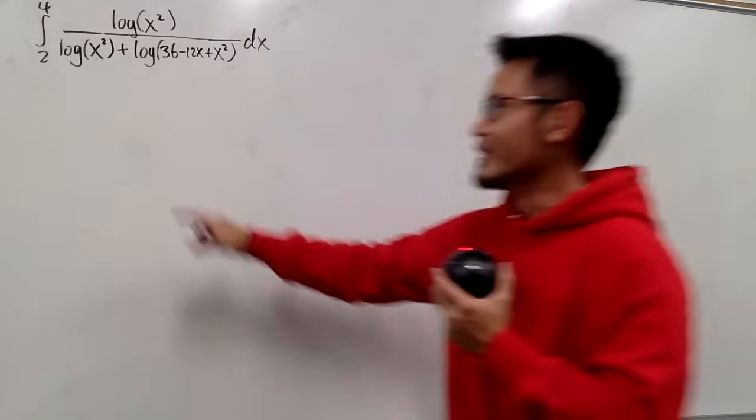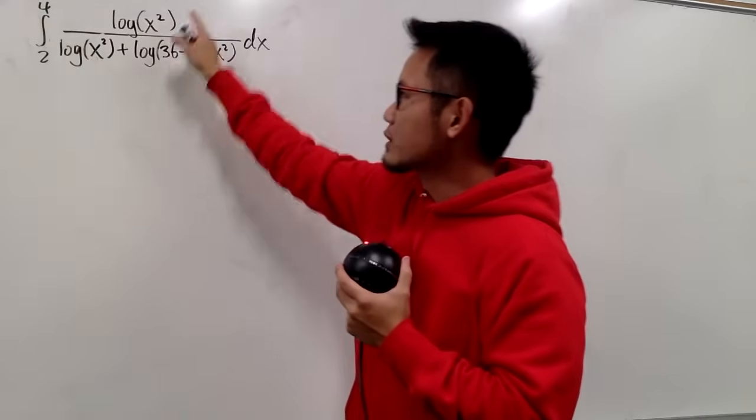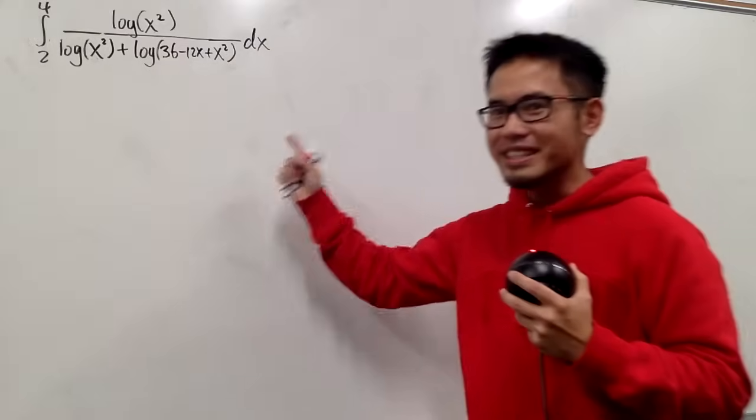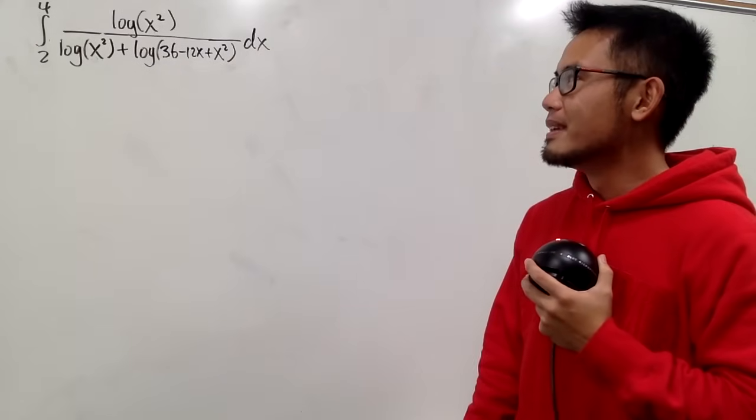So this is the integral from 2 to 4: log(x²) over log(x²) plus log(36 - 12x + x²). Crazy enough, huh?